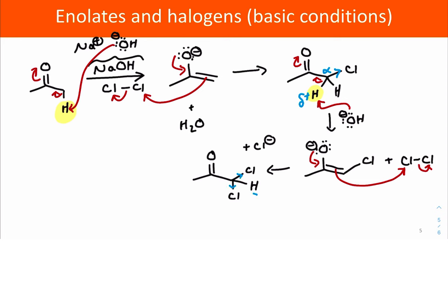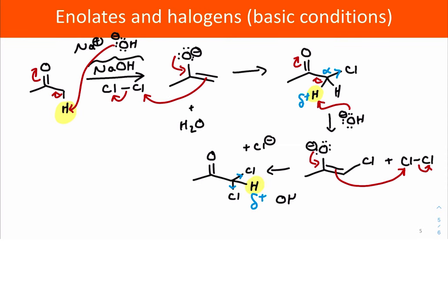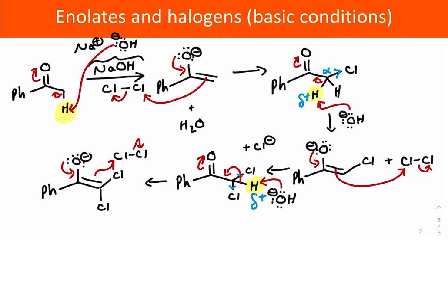Now we have two chlorine atoms pulling electron density away. So now the acidity of the remaining proton is even higher than the first two. And so it's going to be deprotonated even faster than the other two. So hydroxide mixing around in that solution deprotonates that third time. And now we're almost done,